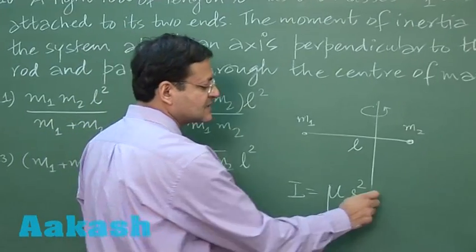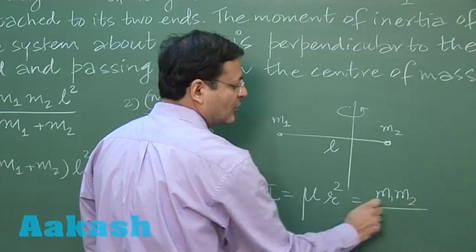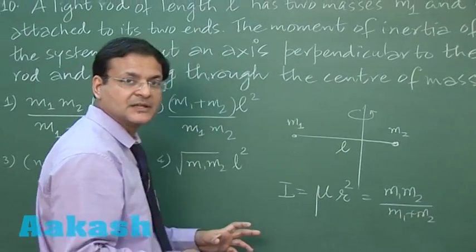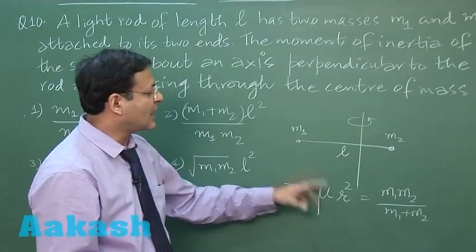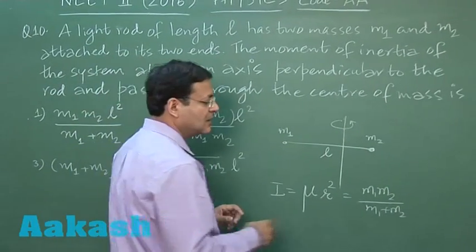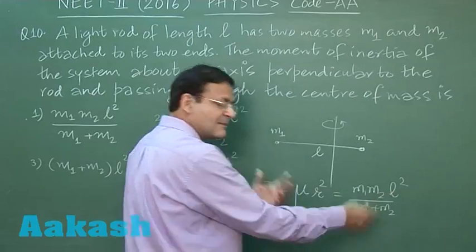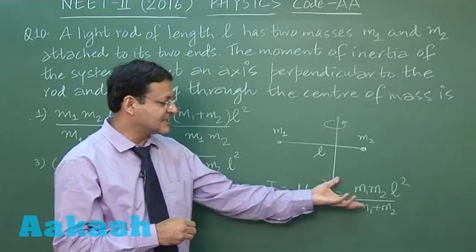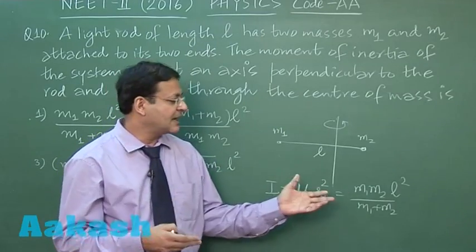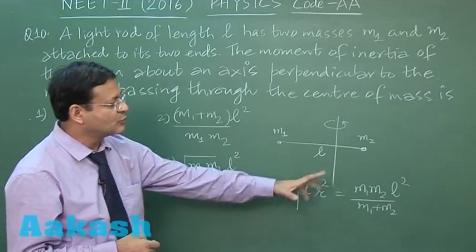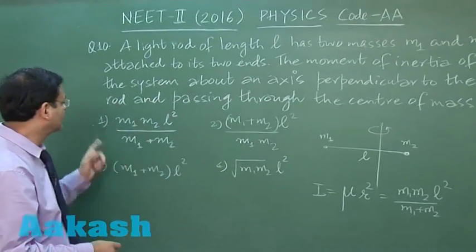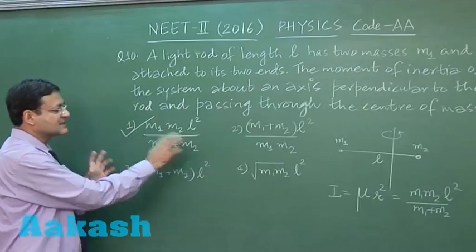Now this reduced mass is nothing but a standard expression: M1 M2 upon M1 plus M2. This is the kind of thing you happen to use in simple harmonic motion as well. And for R you will be taking the separation between them, so it will be L square. So this is the same expression you will be getting even if you follow the conventional method of doing. So I will be suggesting this as a general result, and I am marking the answer M1 M2 L square upon M1 plus M2. If you look at the options, you will find that the first option is saying something like that.